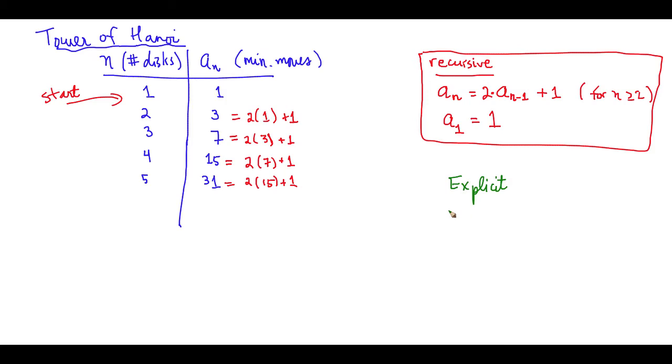And what you notice here is that 1, 3, 7, or what I notice here is that 1, 3, 7, 15, 31, they're very, very close to powers of 2. So 3 is really close to 4. 3 is really just 4 minus 1.